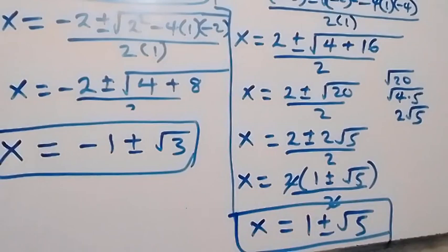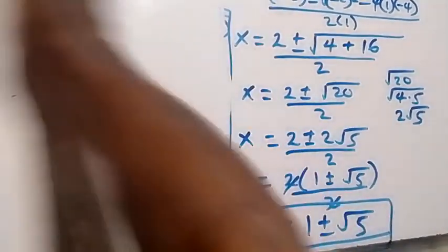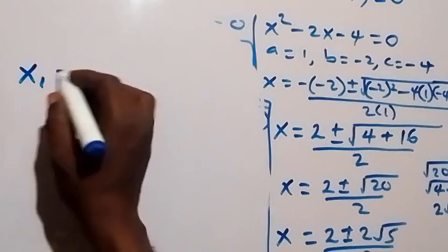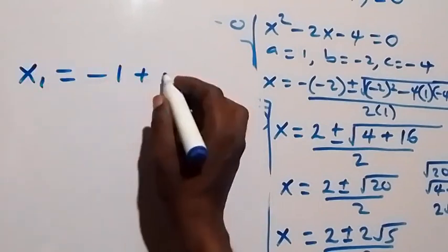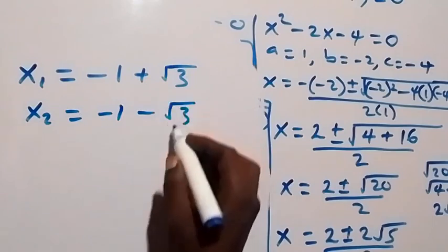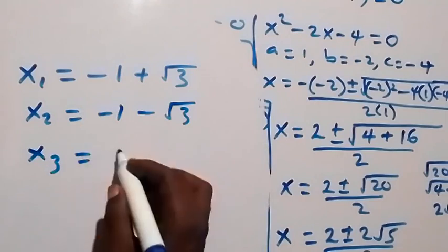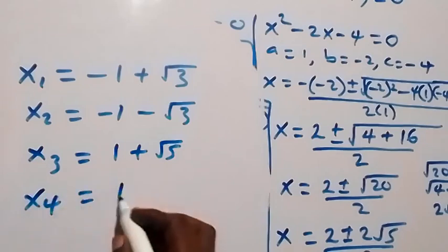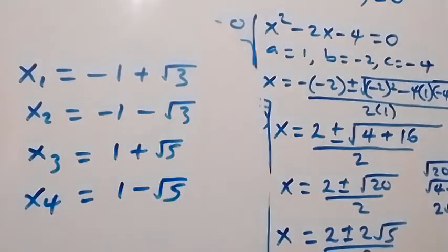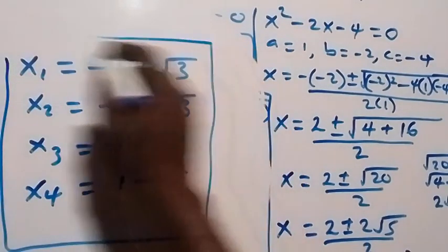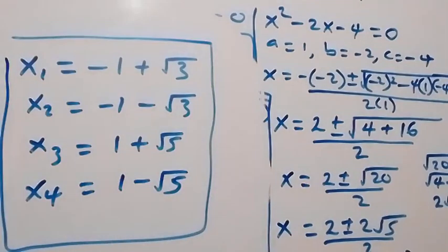Altogether we have four solutions. x1 equals minus 1 plus root 3, x2 equals minus 1 minus root 3, x3 equals 1 plus root 5, and x4 equals 1 minus root 5. Those are all four solutions to this given problem. Thank you for watching. Subscribe to my channel, turn on the notification bell, share this video and give a thumbs up.